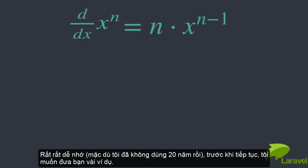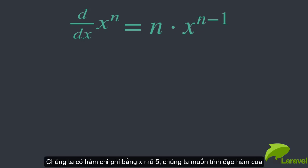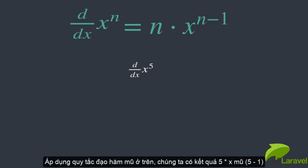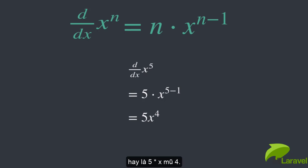But before we move on, let me give you a couple of quick examples. So say we have a cost function that is x to the power of five. And we want to calculate this cost function's derivative. If we apply the power rule, then we simply get five times x to the power of five minus one, which is five times x to the power of four. And that's all there is to it. That's the function of the derivative.